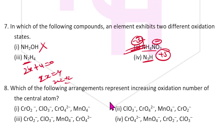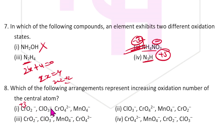Eighth question: Which arrangement represents increasing oxidation number of the central atom? CrO₂⁻: x − 4 = −1, so x = +3. ClO₃⁻: Cl is +5. CrO₄²⁻: Cr is +6. MnO₄⁻: Mn is +7. So the increasing order is +3, +5, +6, +7.